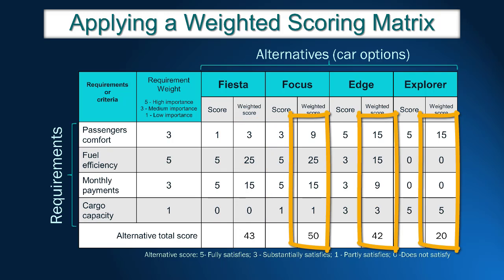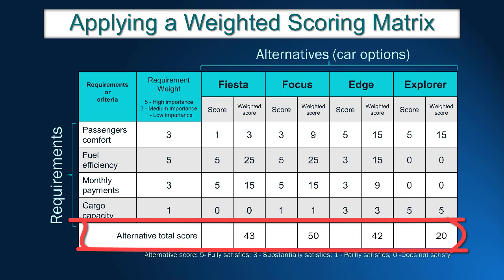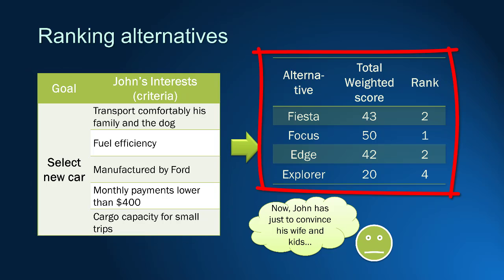Now we can repeat the calculation for the remaining alternatives. It is now possible to see how suitable each alternative is for John's requirements. The weighted scoring method translated needs and opinions into weighted scores, which helps compare alternatives using numerical values. The requirements and interests were translated into requirements with weights, and the total weighted score was calculated — making it possible to compare and rank alternatives. In this case, Ford Focus is the most suitable for John's needs.